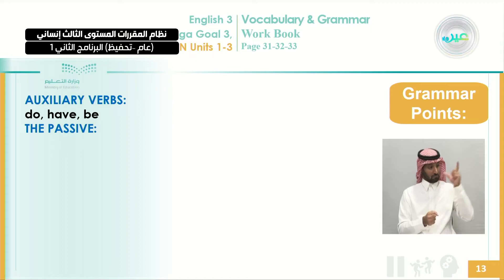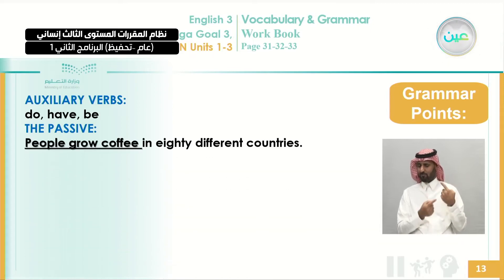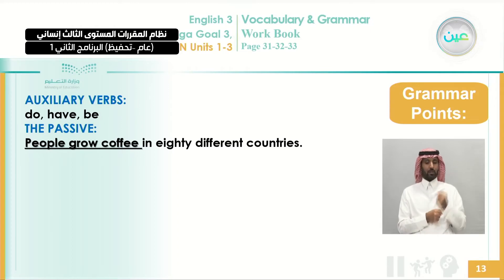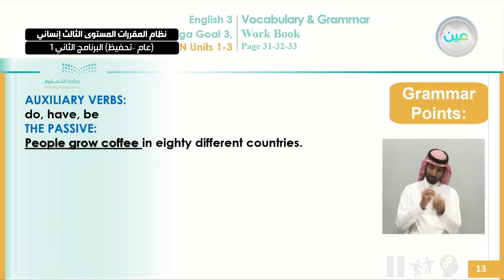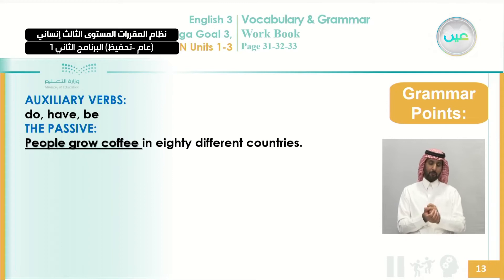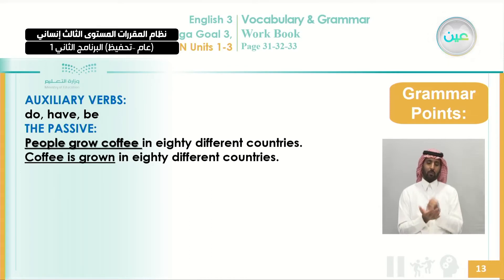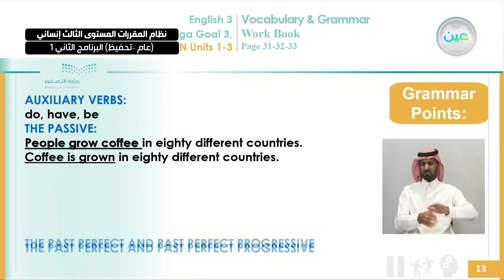The passive is different from the active form. In the active: people grow coffee — people is the subject, grow is the verb, and coffee is the object. To change to passive, we start with the object. Since it's present tense: coffee is grown. People grow coffee is active; coffee is grown is the passive form.